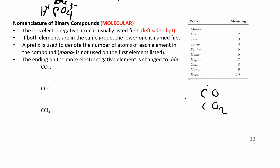The trick is we never start with mono. If you just have one, you don't ever start with mono — mono is a bad way to start a name. So we don't say 'monocarbon monoxide,' we just say 'carbon monoxide.' If you only have one, you don't prefix it. If you have two, then you use di, but you can't start with mono.